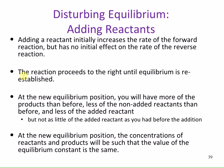If we disturb an equilibrium by adding reactants — say A going to B — adding a reactant initially increases the rate of the forward reaction but has no initial effect on the rate of the reverse reaction. The reaction proceeds to the right until equilibrium is re-established. If I increase the concentration of A, that reaction will shift to the right to make more B. At the new equilibrium position, you will have more products than before, less of the non-added reactants, and less of the added reactant — but not as little as you had before the addition. The equilibrium constant remains the same.